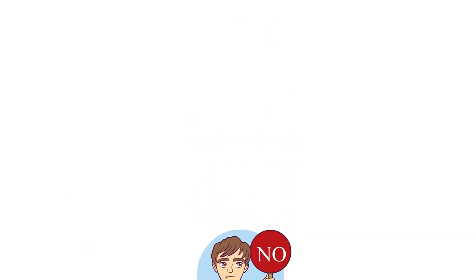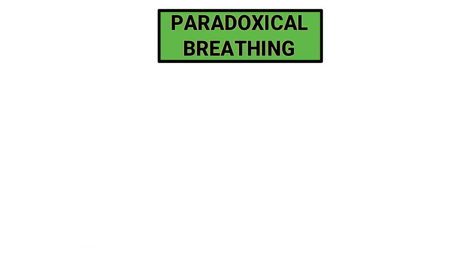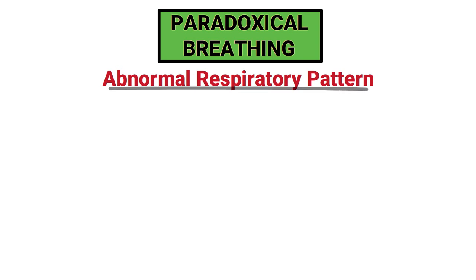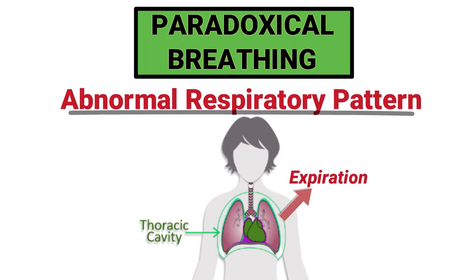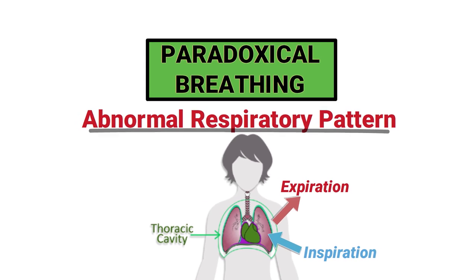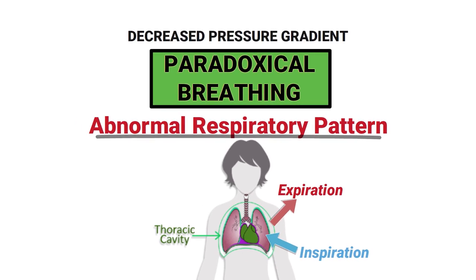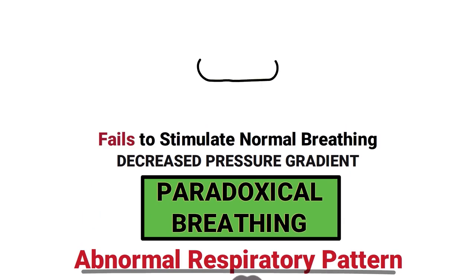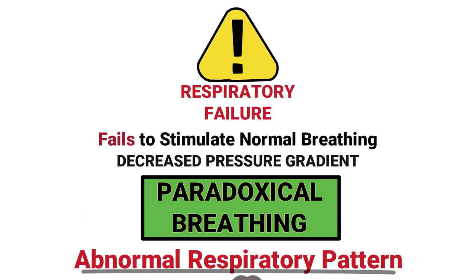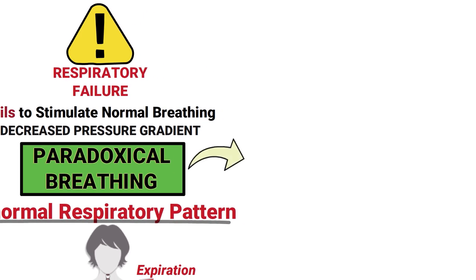Ideally every patient would have a normal breathing pattern with a normal rate, depth, and rhythm. Paradoxical breathing is an abnormal respiratory pattern that occurs when the thoracic cavity moves outward during expiration and collapses inward during inspiration. This abnormal pattern is associated with a decreased pressure gradient, which fails to stimulate normal breathing and can result in respiratory failure.